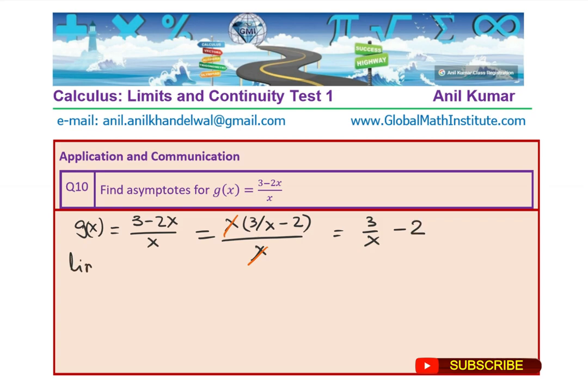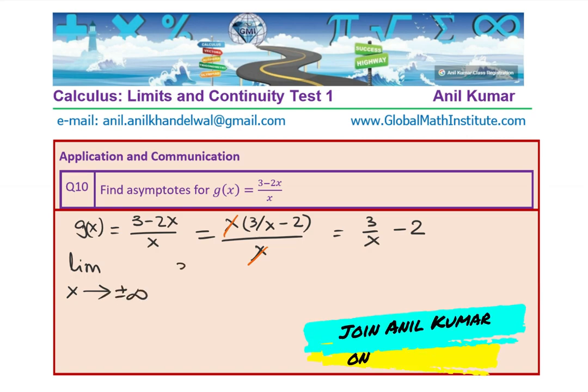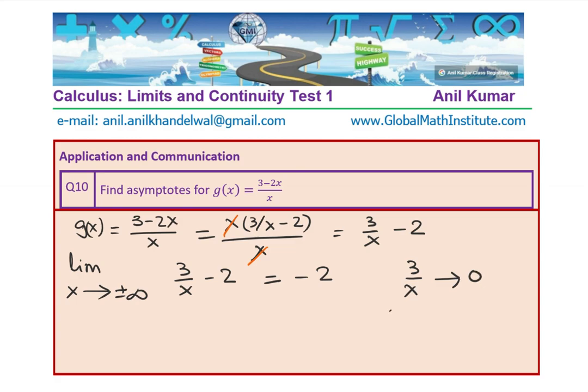Therefore, I could write this expression as 3 over x minus 2. Now look here. If I have defined the limit as x approaches plus or minus infinity for 3 over x minus 2, clearly this is equal to minus 2, since 3 over x approaches 0.